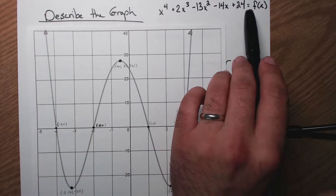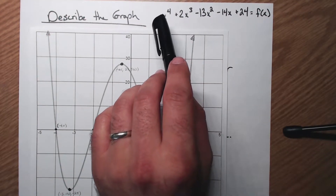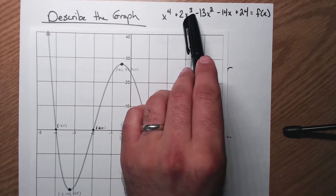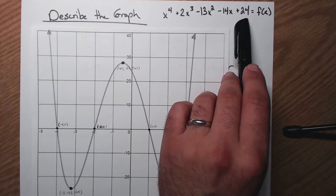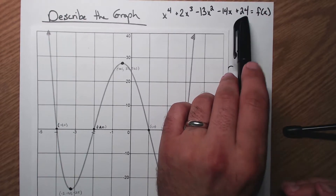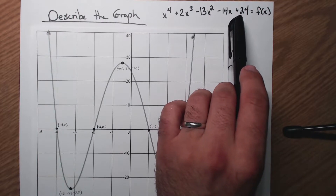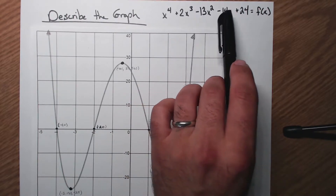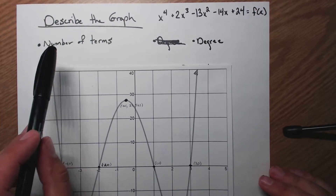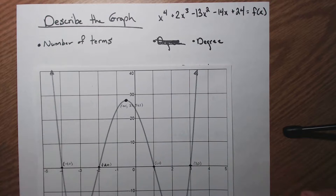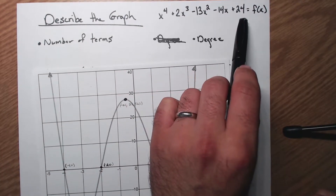Let's double check that this is in order — the exponents go 4, 3, 2, 1. This last constant term is actually x to the 0 power times 24, so we don't have to worry about that so much. The number of terms, separated by plus and minus signs, is 5 terms.